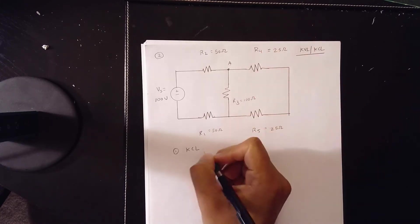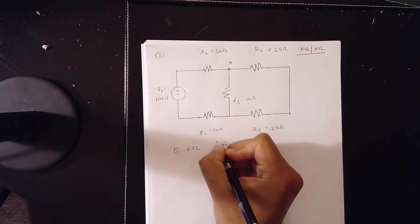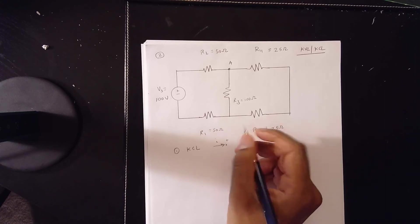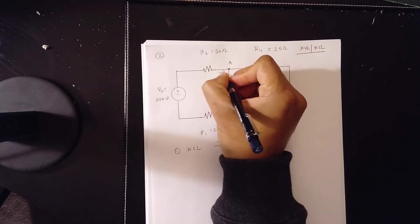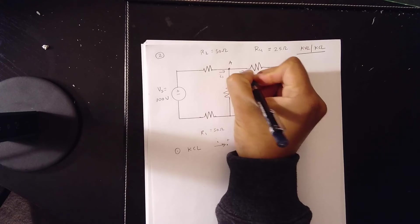And at KCL, you simply use the mathematical summation. Some of the currents coming into the node are positive. And so, therefore, you draw your currents, I1, I2, and then you have, obviously, I3.